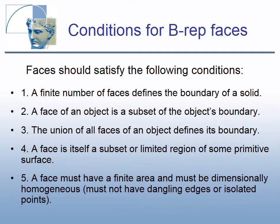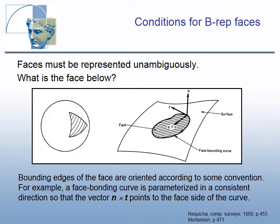Faces of a BREP model should satisfy the following conditions: a finite number of faces defines the boundary of a solid; a face is a subset of the object's boundary; the union of all faces defines the boundary; a face is a subset of some primitive surface; a face must have finite area and must be dimensionally homogeneous, with no dangling edges or isolated points; and faces must be represented unambiguously.